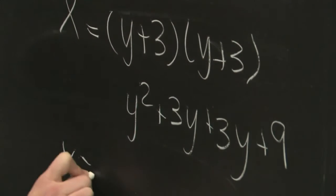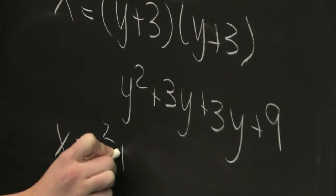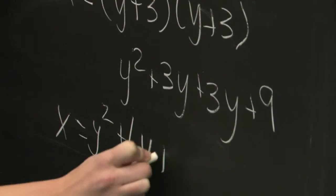So we know that x is equal to y squared plus 6y plus 9.